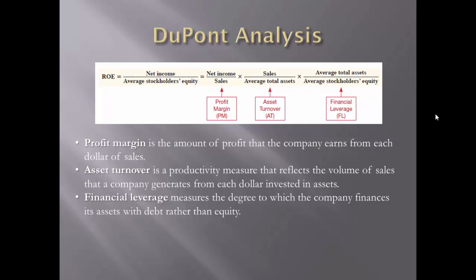The asset turnover ratio measures the amount of revenue compared with the investment in assets. Generally, we want turnover to be higher rather than lower. Turnover measures productivity, and an important company objective is to make assets as productive as possible. Because turnover is one of the components of ROE, increasing turnover increases shareholder value. Turnover should therefore be viewed as a value driver.